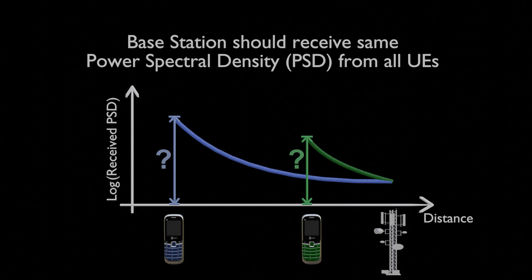Here's how it works. First, UEs calculate its path loss by measuring some pilot signals from the base station. The base station also tells the UEs its target PSD, called P0. Then, the UEs set their transmit power to P0 plus the path loss. Pretty straightforward, right?